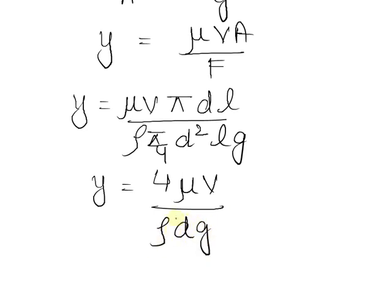We have the value for viscosity velocity density distance that is length and g that is acceleration due to gravity.